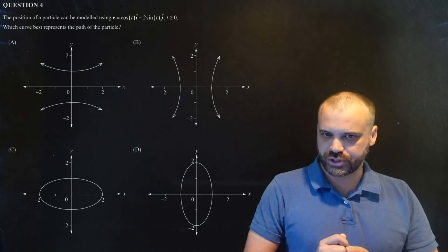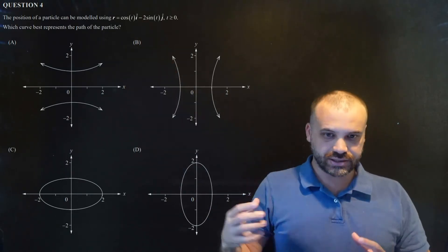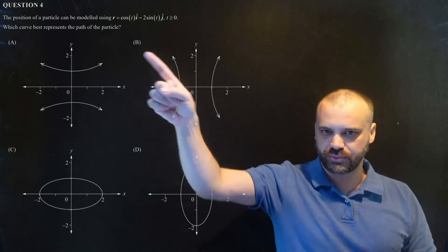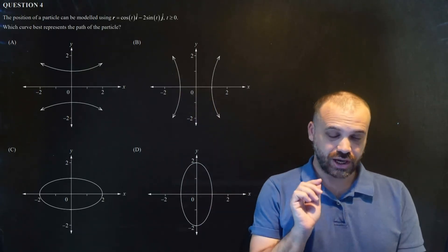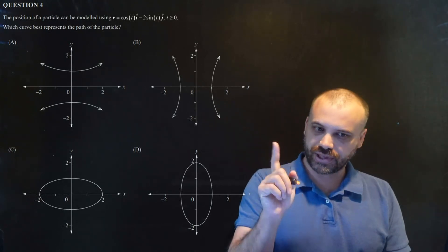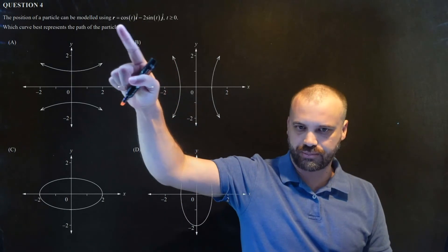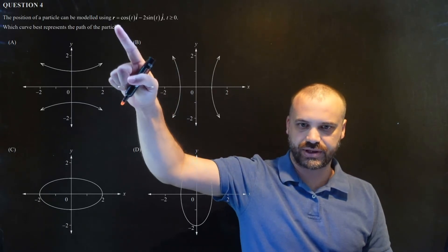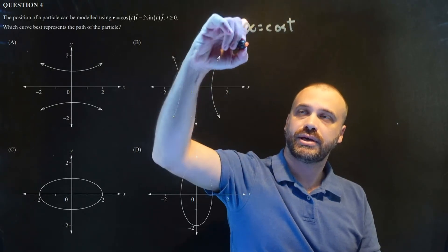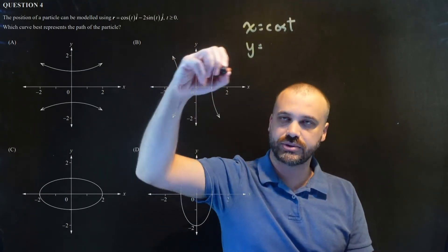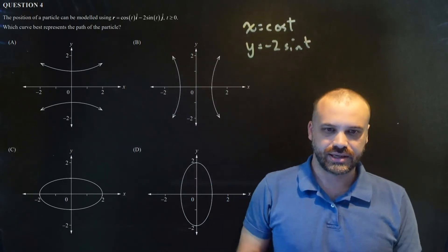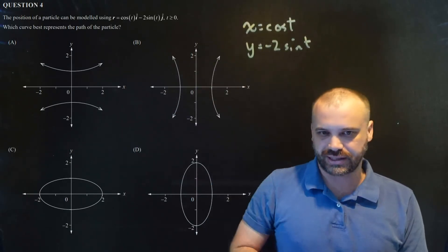Here's the first question. We've got some sort of vector equation and they're asking what's the path of the particle — which one of these works? We take this vector equation and we should be able to plug it straight into our calculator. To do that, we're going to create a parametric equation out of this, so we have x equals cos t and y equals negative 2 sine t. Let's plug that into our calculator.